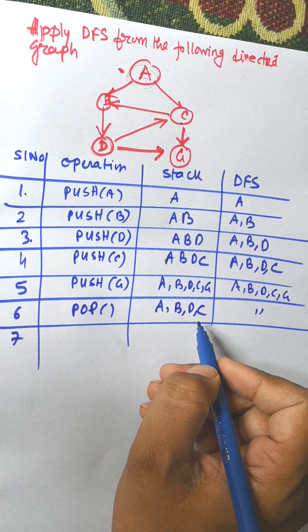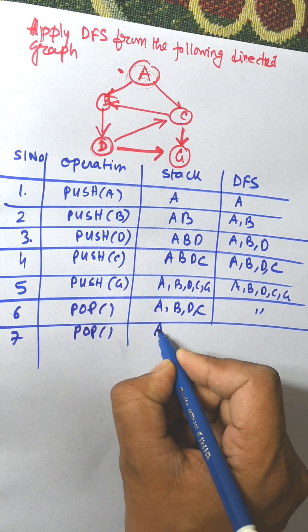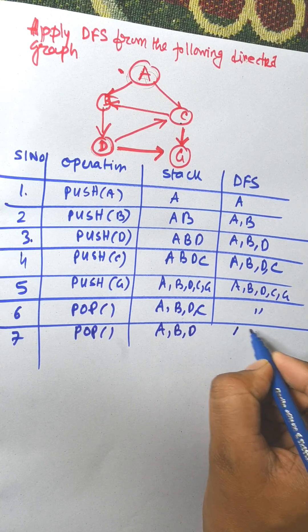Next one is from C. Already A and B are visited. So we need to perform pop. Stack is A B D. Answer remains the same.